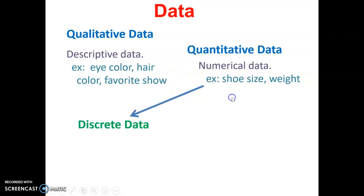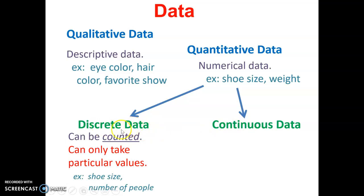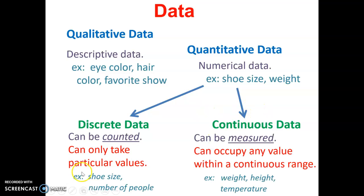Under quantitative data, we're going to have two types: discrete data and continuous data. Those are both numerical sets of data. Discrete data can be counted. In other words, it can only take on particular values. For example, shoe size would be a discrete piece of data. Number of people in a room, for example, also discrete data. Continuous data can be measured and can occupy any value within a continuous range. For example, weight, height, and temperature. Those can be measured to any degree of accuracy, any number of decimal places. It can be any value. Really important summary of data. Make sure you understand that.